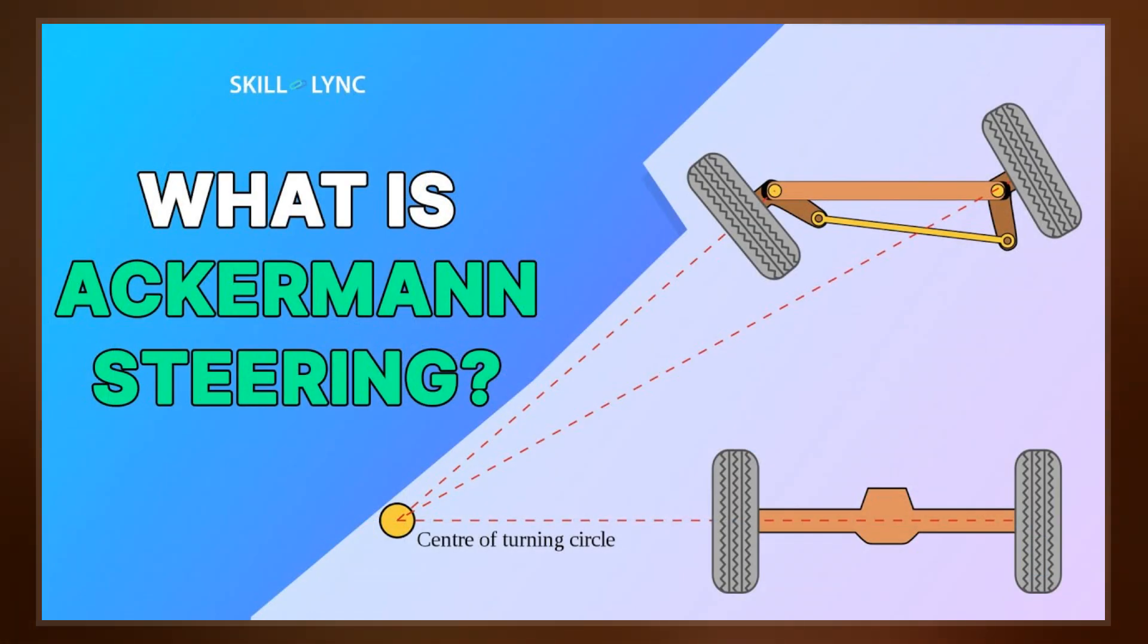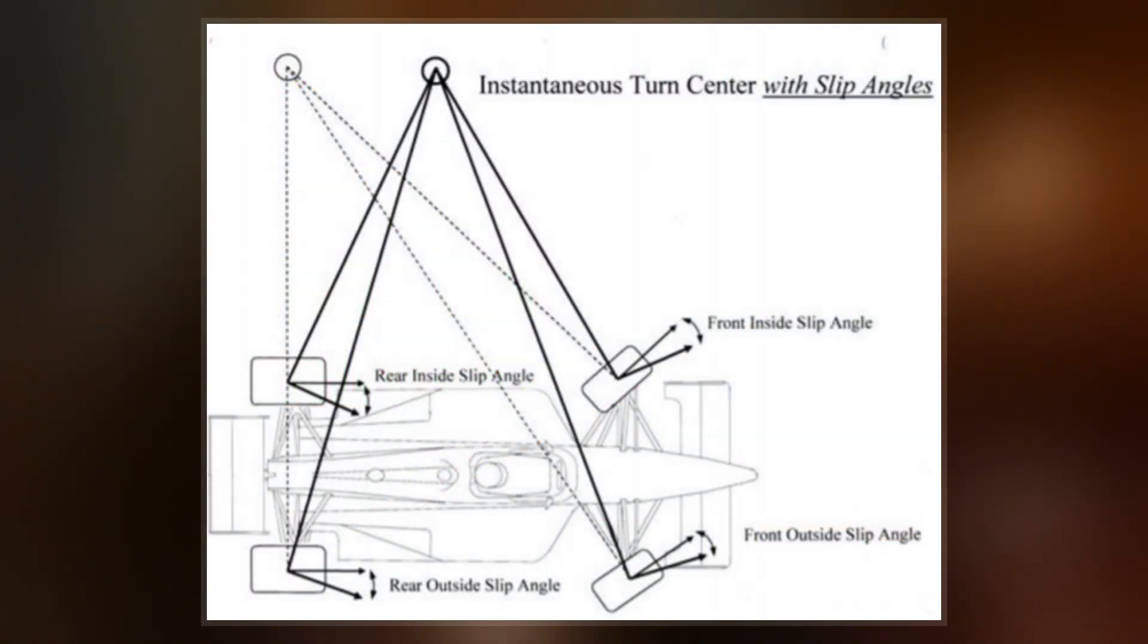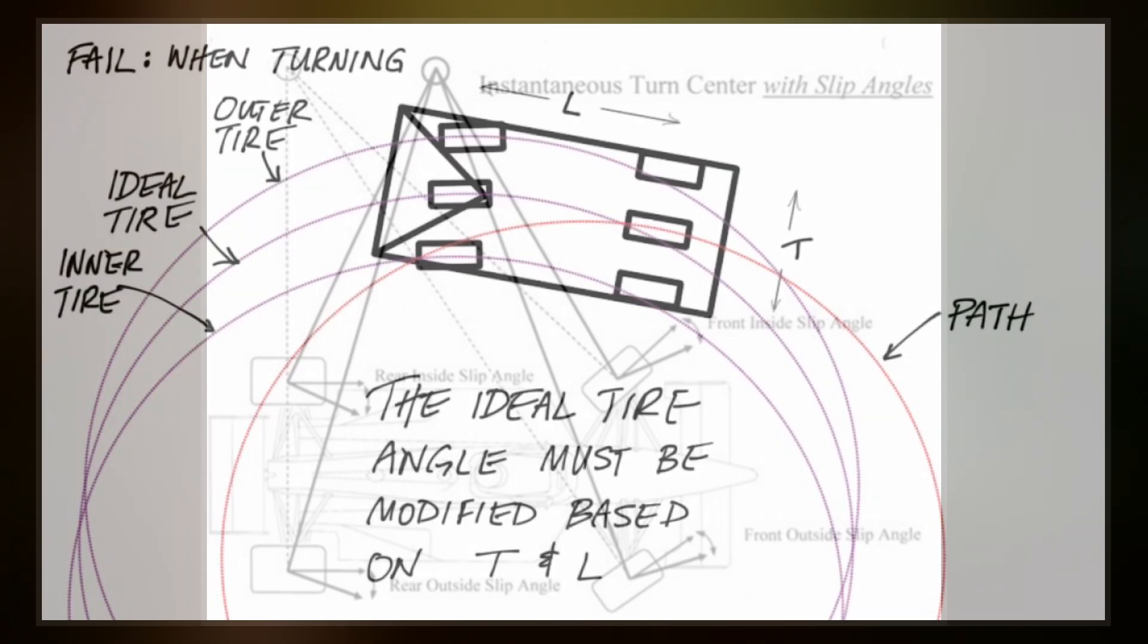It was invented by the German carriage builder Georg Lankensperger in Munich in 1817, then patented by his agent in England, Rudolf Ackerman in 1818 for horse-drawn carriages.